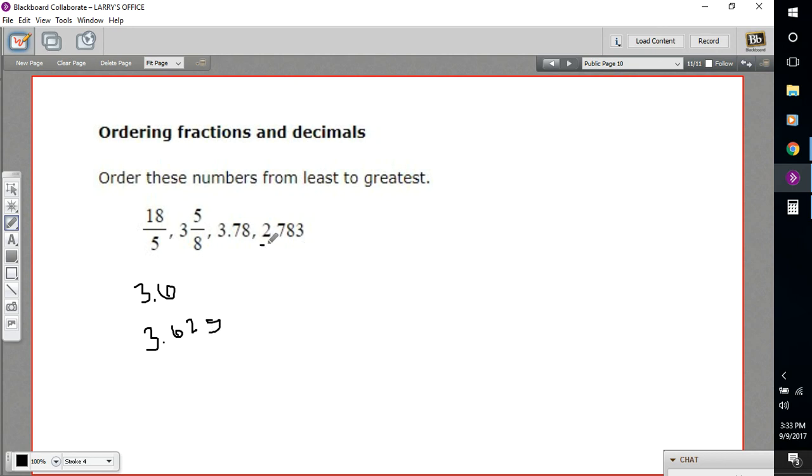So I've got one number here that starts with a 2, so that's definitely the smallest, 2.783. So we'll put that one first. And then I've got two that are 3.6, and one is 3.78. So the 3.78 is definitely the biggest, so that'll go down here.